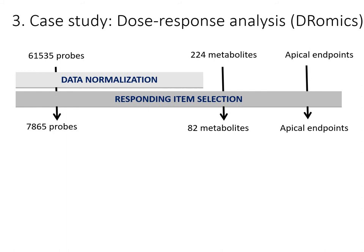The significantly responding probes, metabolites, and apical endpoints over the concentration gradient were identified by the tool. It detected 7,865 probes, 82 metabolites, and 2 apical endpoints as significantly responsive to the gradient of triclosan.